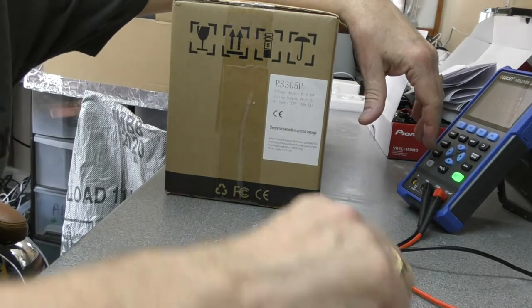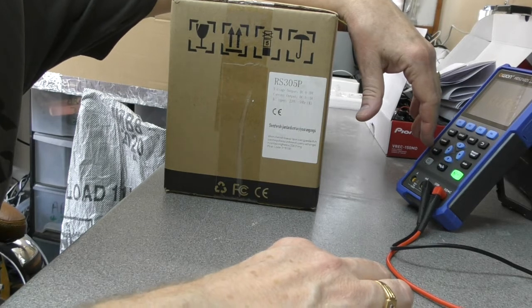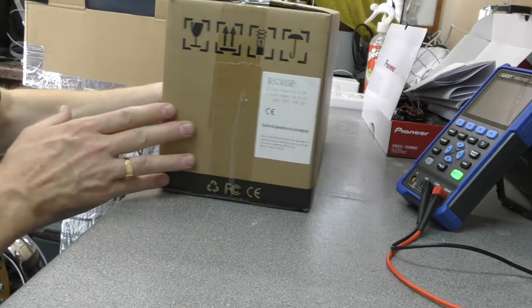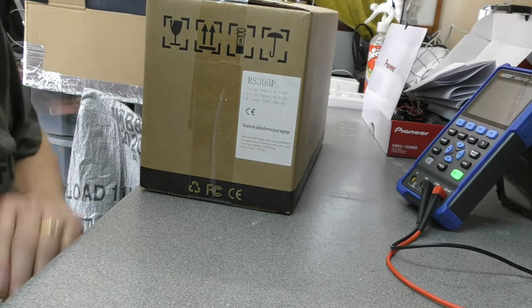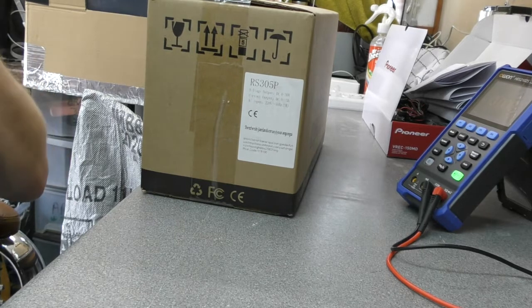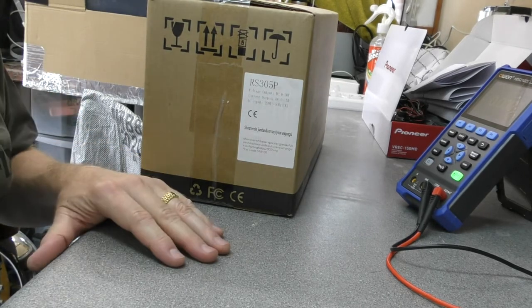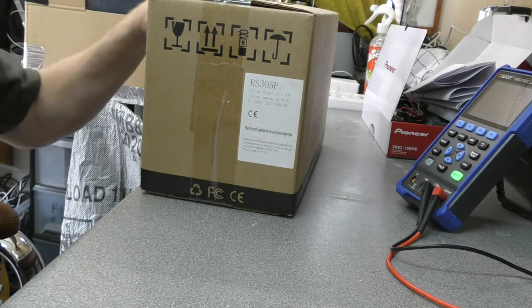So I needed to investigate the Vantrue hardwire kit for my E1 dashcam. I wanted to use parking mode and it requires a connection to a live fuse when the car is turned off. Just coincidence that after a few days that had been installed, the car battery was completely flat.